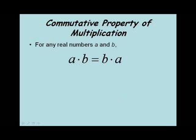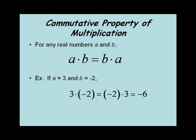Now we'll look at the commutative property of multiplication. For any real numbers a and b, a times b equals b times a. We just switch the order and the answer is the same. If we let a equal 3 and b equal negative 2, 3 times negative 2 equals negative 2 times 3, both equal negative 6.